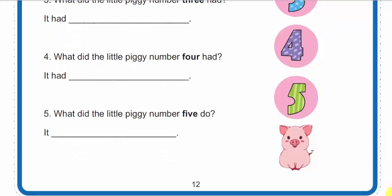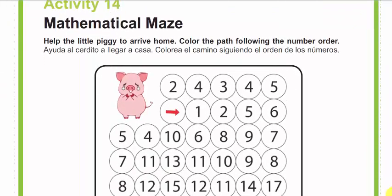Let's continue. Activity number 14: Maze. Help the little piggy to arrive home. Color the path following the number order. Vamos a ayudar al cerdito a llegar a casa. Vamos a colorear el camino siguiendo el orden de los números.